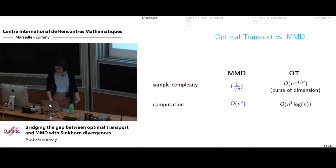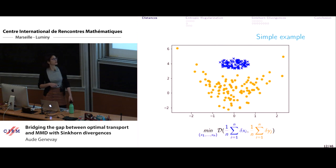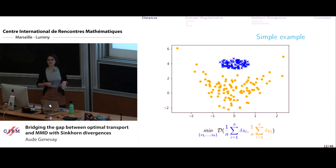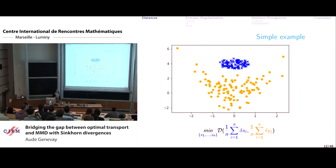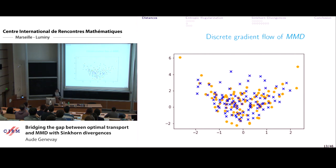So why do we still care about optimal transport? Consider the same setting as quantization, but with the same number of points in both measures. I want to see how both notions of distance behave when I do gradient descent.